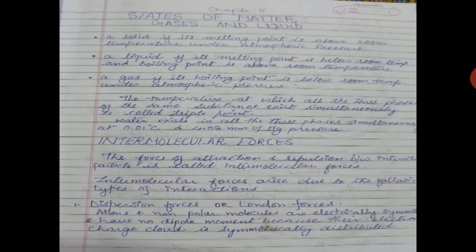The temperature at which all three phases of the same substance exist simultaneously is known as the triple point. For example, water exists in all three phases simultaneously — solid, liquid and gas — at 0.01 degree Celsius and 4.58 mm of Hg pressure.